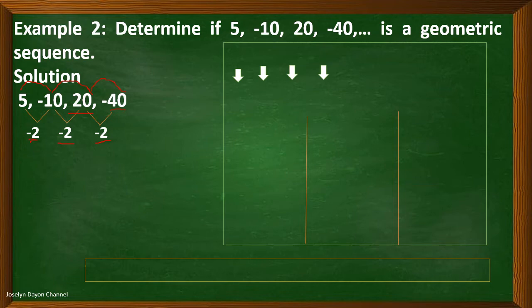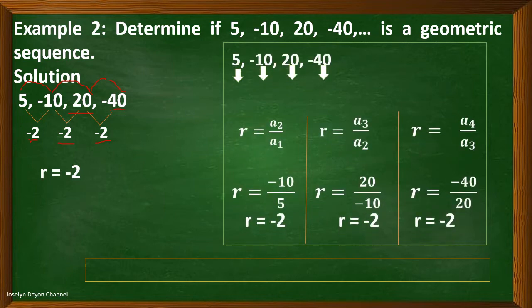Therefore, we can conclude that the sequence is a geometric sequence. Now let me show you the detailed solution in finding the common ratio. For the given sequence 5, negative 10, 20, negative 40, we have the corresponding values of first term, second term, third term, and fourth term.